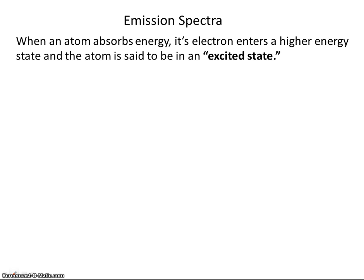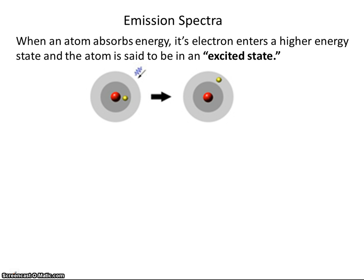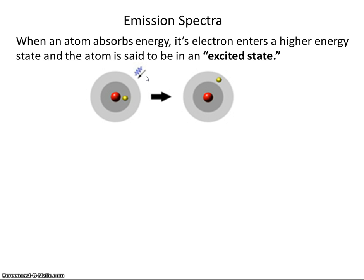When an atom absorbs energy, its electron enters a higher energy state, and the atom is said to be in an excited state. So this is an atom — the nucleus is the red dot in the middle, and the electron is the yellow dot. This symbol here represents light, or energy being inputted, or energy coming in to the atom.